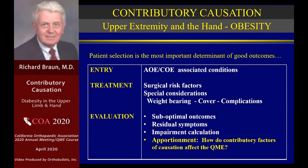The patient then reaches maximal medical improvement, and the evaluation phase is initiated with consideration of suboptimal outcomes that we have to explain so others understand why this happened. Some of these people are going to have residual symptoms — the nerve I just showed you is unlikely to get a full recovery from decompression. The impairment calculation must consider apportionment. That brings us back to our core question: how do contributory factors affect the QME with the obese patient?